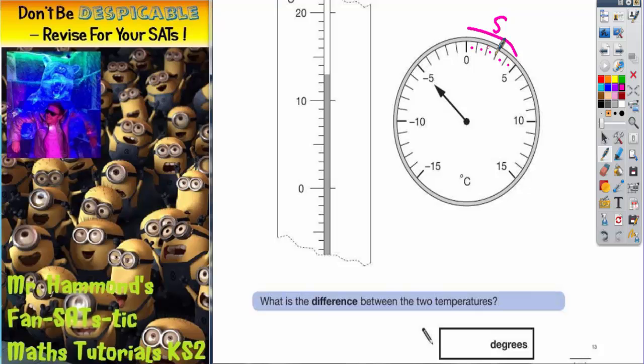So one, two, three, four, five, six, seven, eight, nine, ten. So that's nice and easy. In fact the round thermometer is nice and easy anyway because the arrow is pointing straight at negative five.